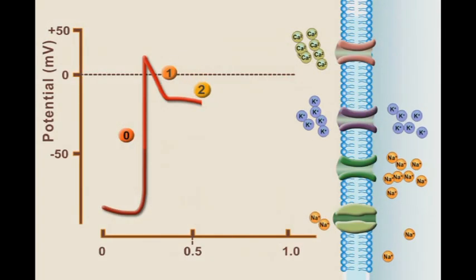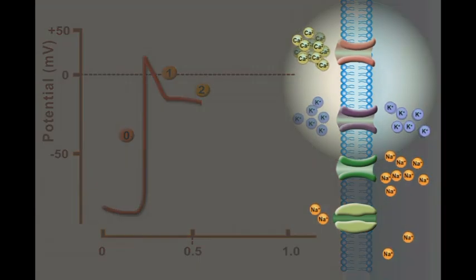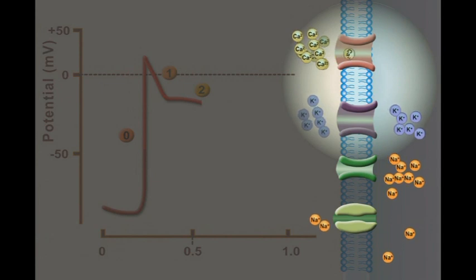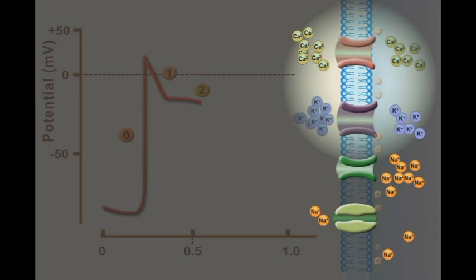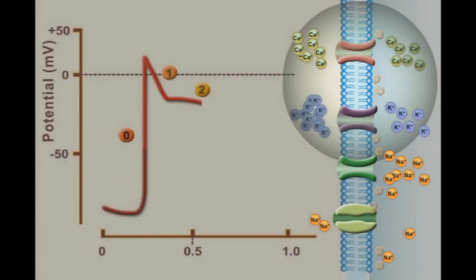In phase two, a more or less plateau pattern is produced. The voltage sensitive calcium channels are opened to facilitate the influx of positively charged calcium ions to balance the repolarizing effects of potassium efflux.